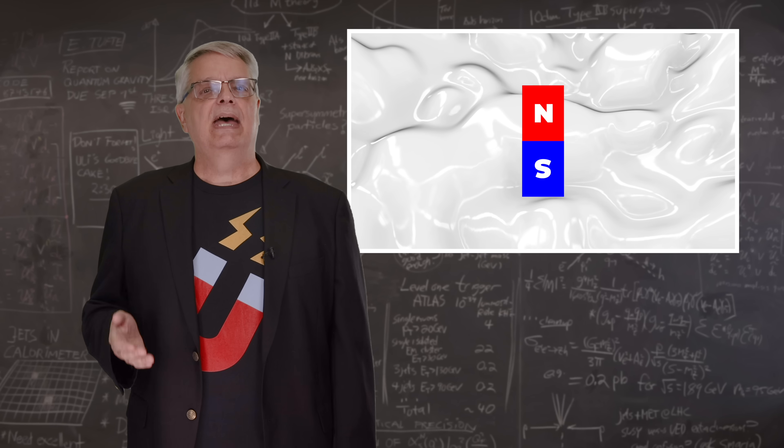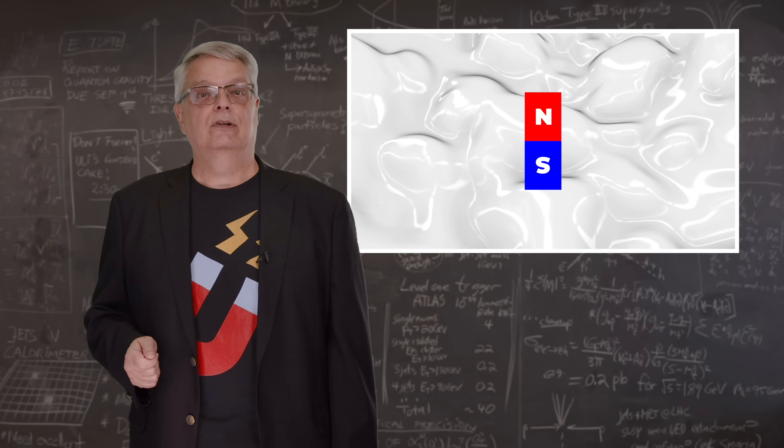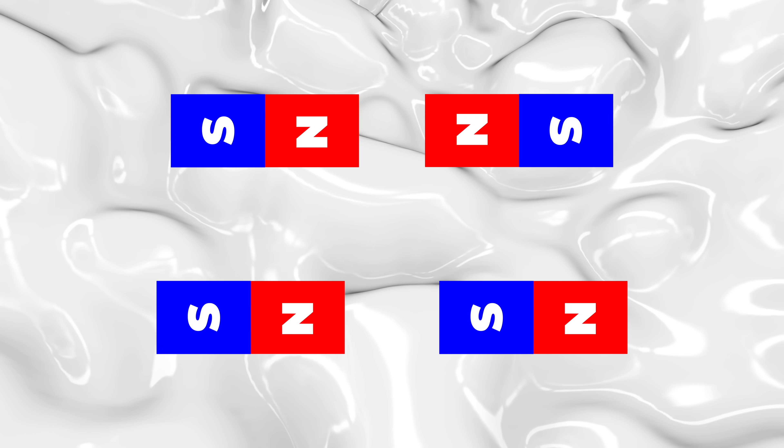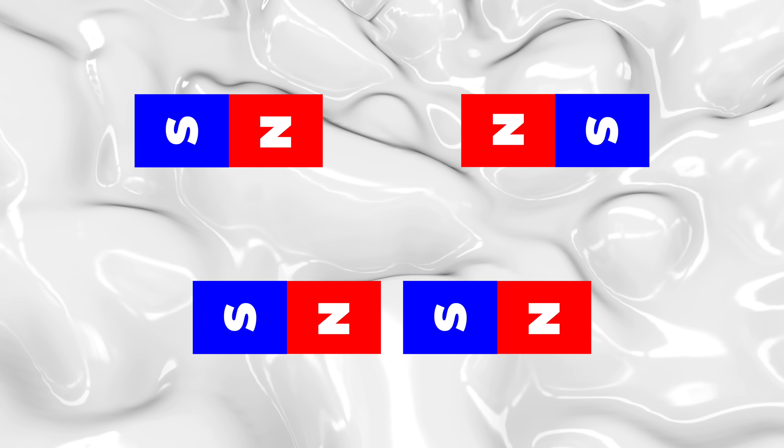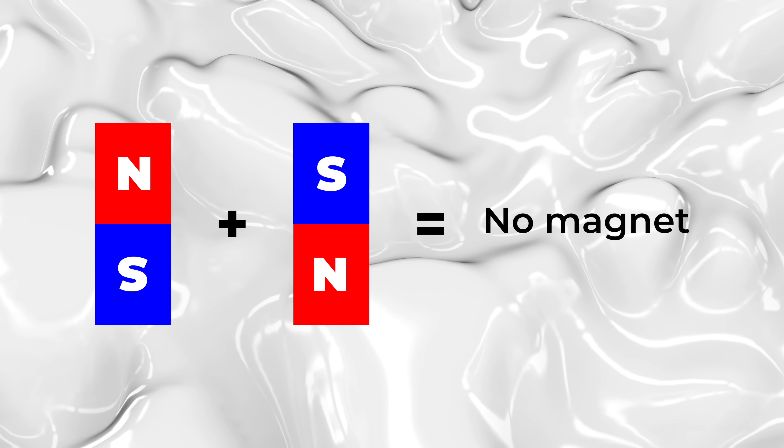So first, the basics. Magnets have two poles, a north and a south. You can't have one without the other. Like poles repel and opposite poles attract. And two magnets pointing in the opposite direction cancel each other out, leaving no magnet at all.